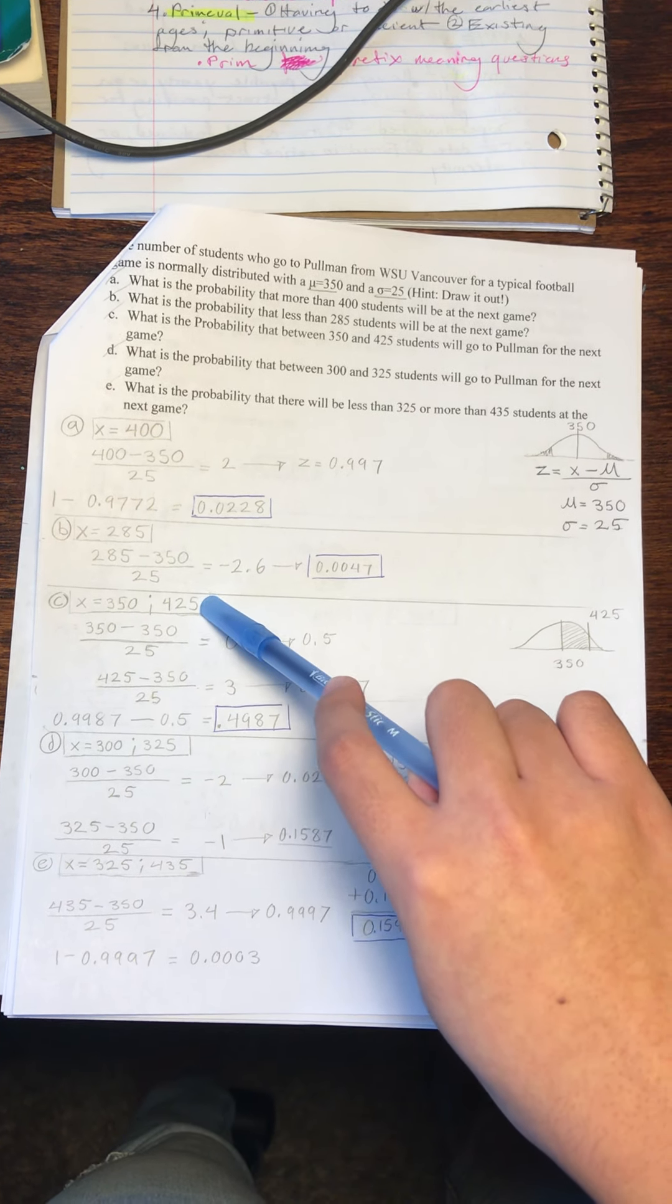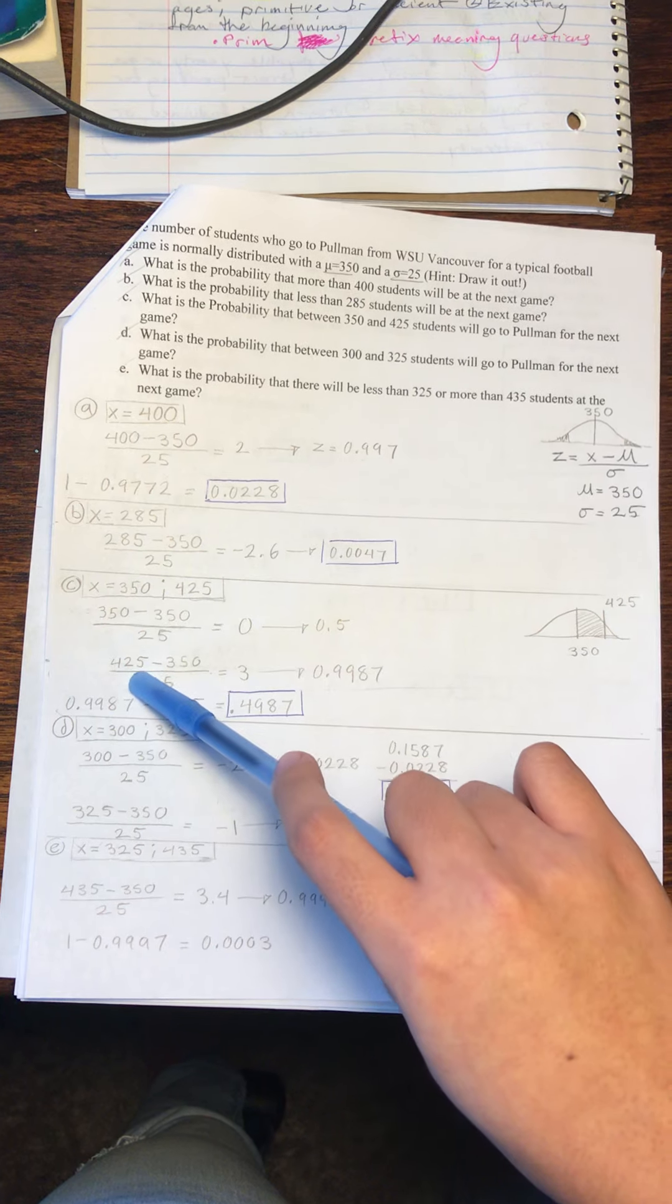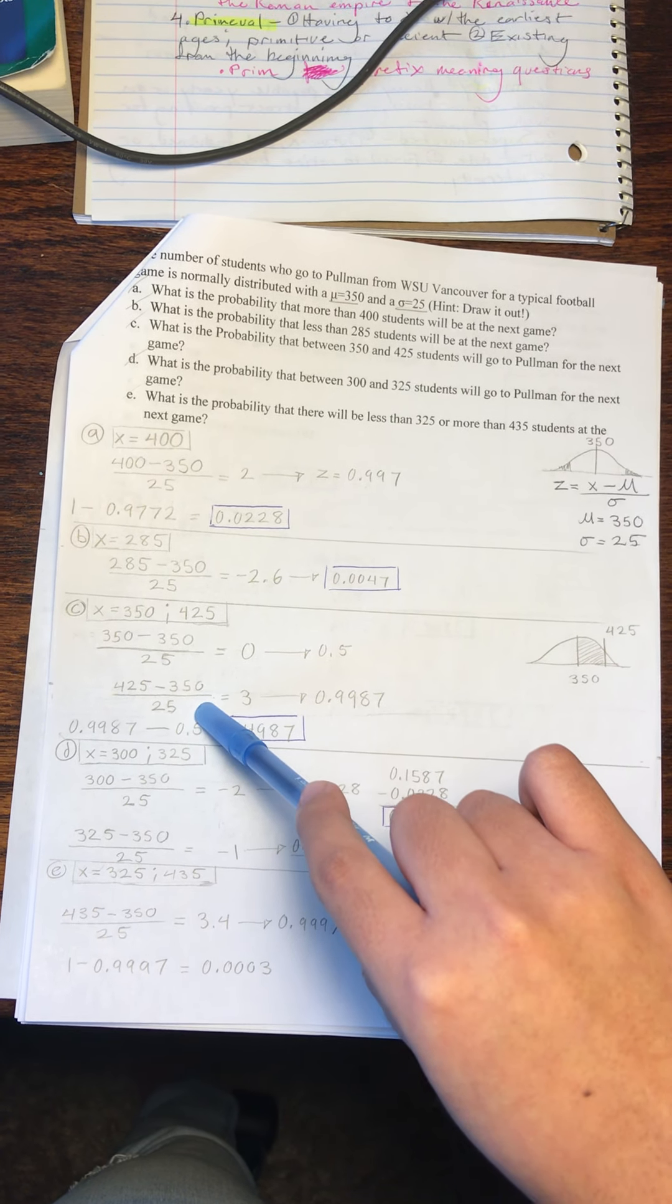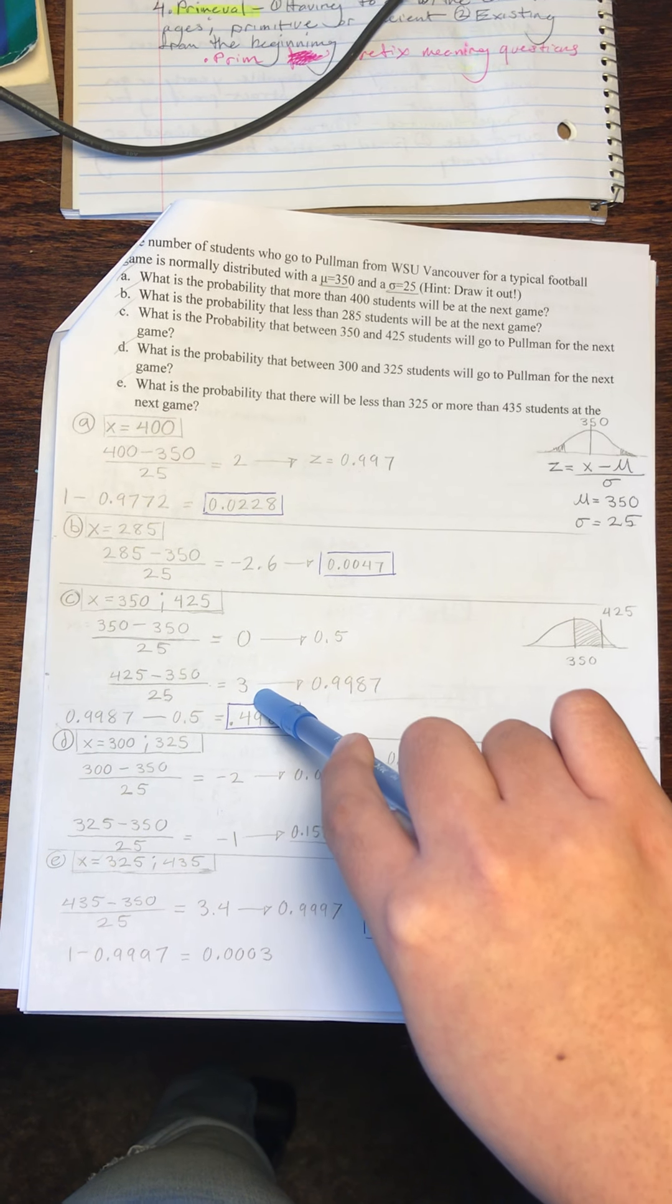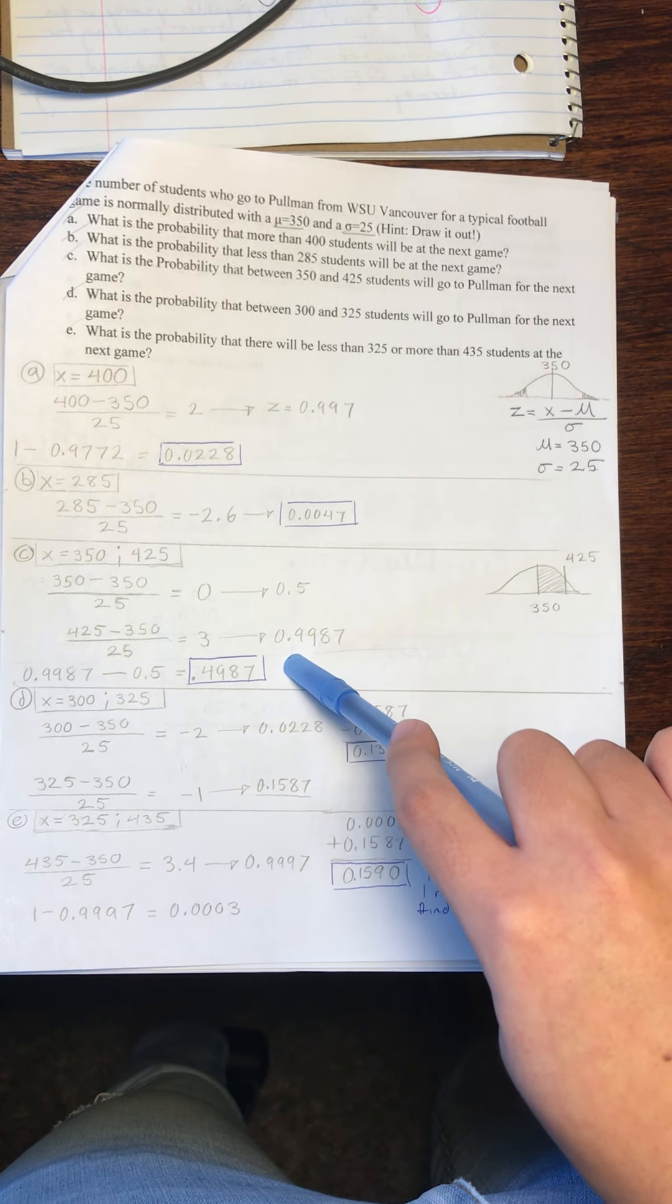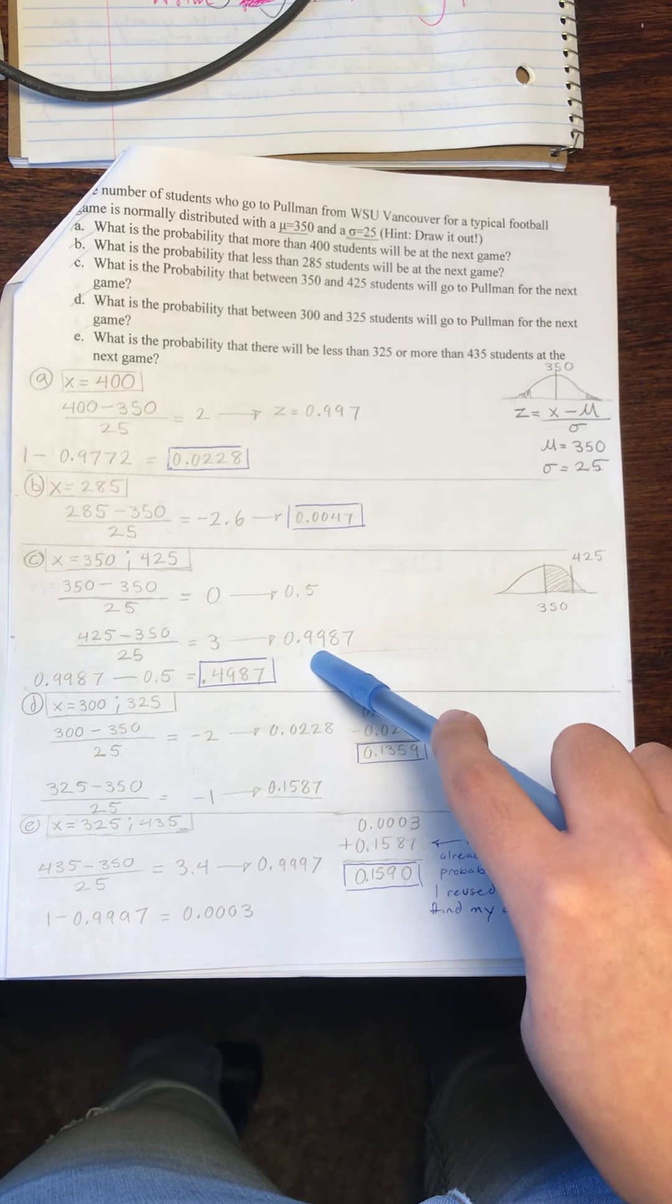For the second x value, we will take 425, subtract 350 over 25, that will give us 3, and that will give us a probability of 0.9987.